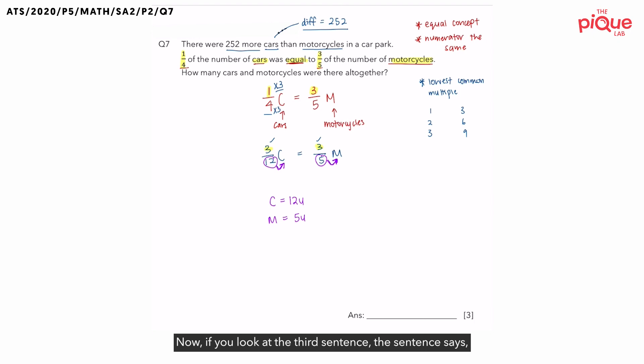Now, if you look at the third sentence, the sentence says, How many cars and motorcycles were there all together? So, immediately, they have thrown you a question. But we don't even know what is one unit. How can we even find the number of cars and motorcycles? If you recall, in sentence number one, there were 252 more cars than motorcycles in a car park. We have not made use of this information, which is a difference of 252.